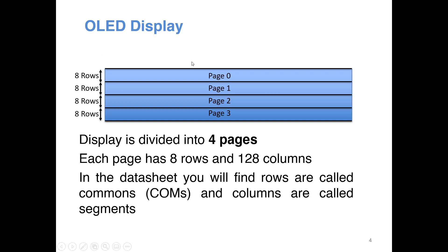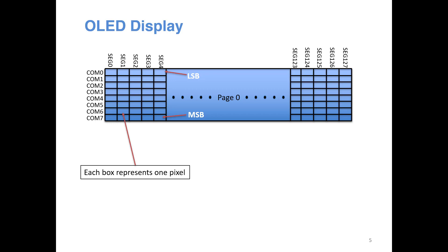This entire display is divided into four so-called pages, and each page has eight rows and 128 columns, making it 128 by 32 in total. In the datasheet, they use the term COMs to indicate rows and they call the columns as segments. Page zero has rows from 0 to 7 and columns 0 to 127.